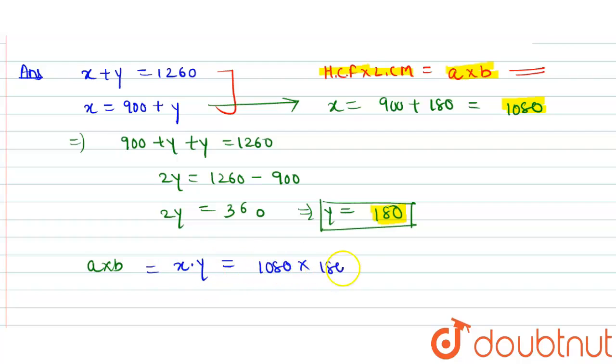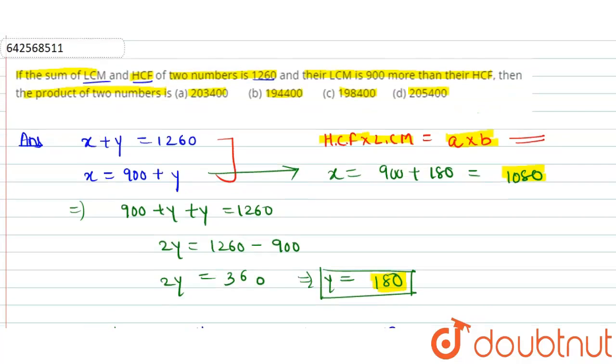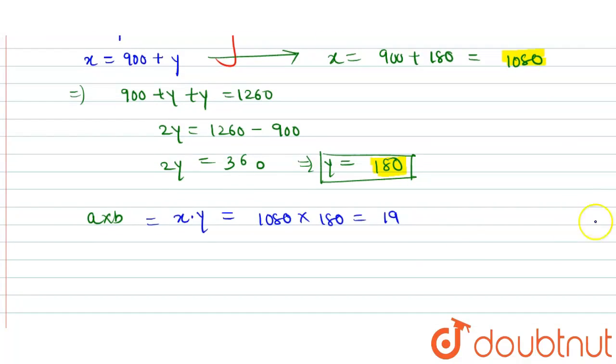So putting the value is 1080 into 180. That will be equal to 194400. This will be the result. Now I can say that the product of the two numbers a and b is 194400.